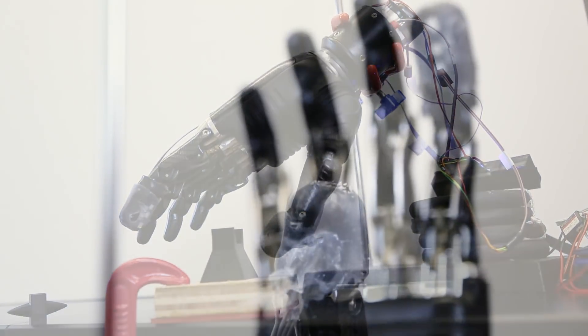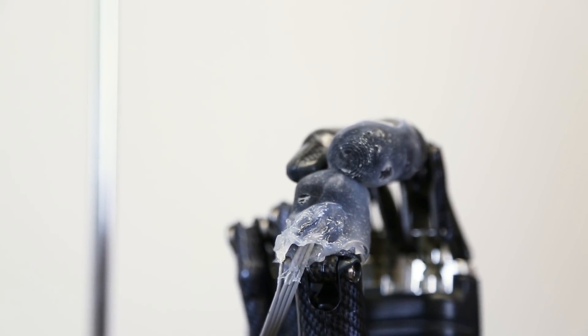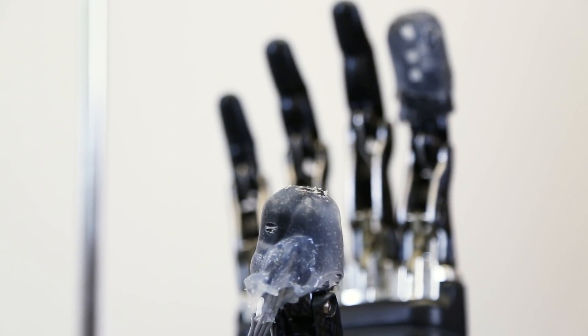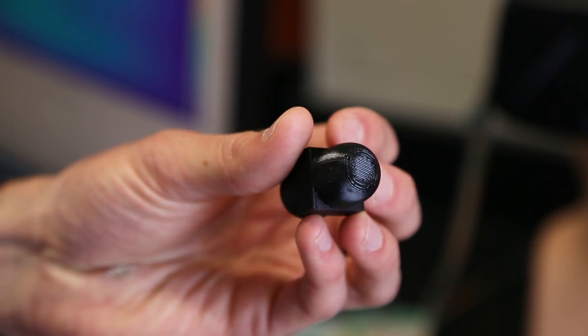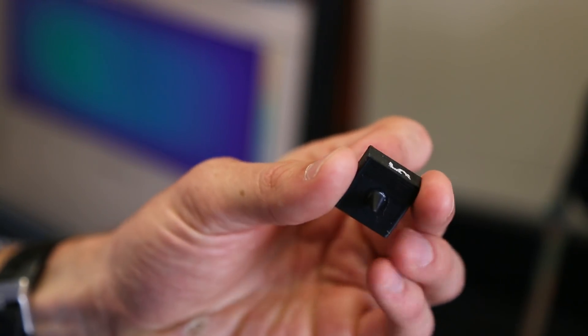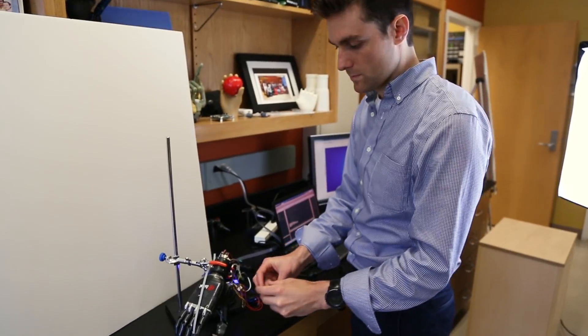We're calling the device we made an e-dermis, an electronic dermis. What's particularly interesting is that we're able to detect an object's curvature, so we can differentiate between something that's nice and rounded versus something that's very sharp and pointy, and that's what lets us differentiate between something that's painful or not.